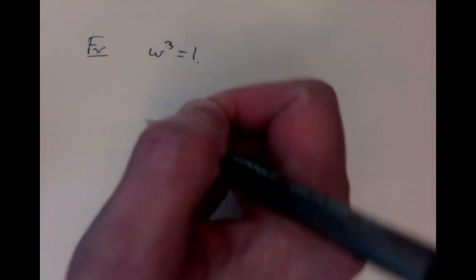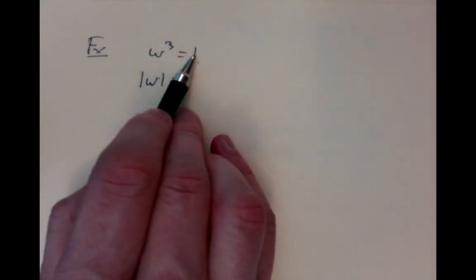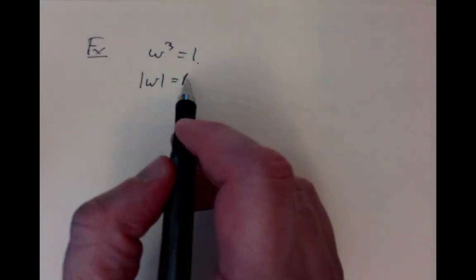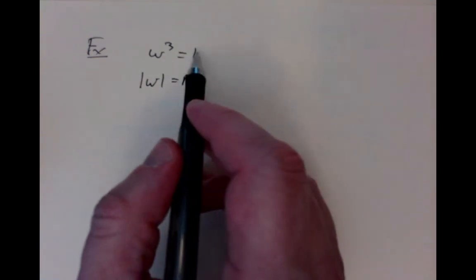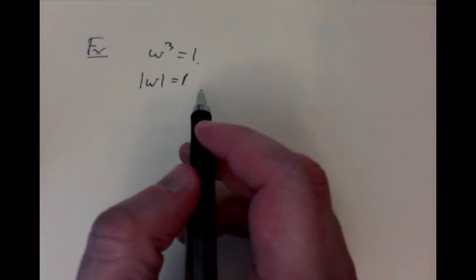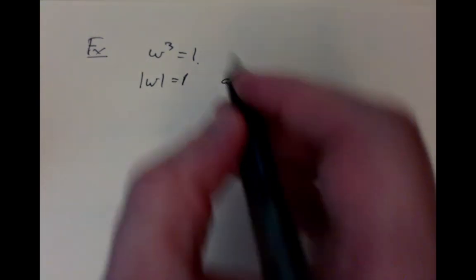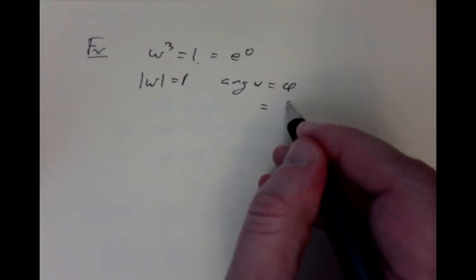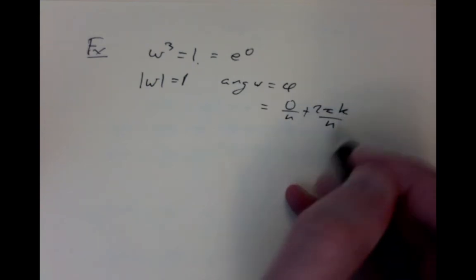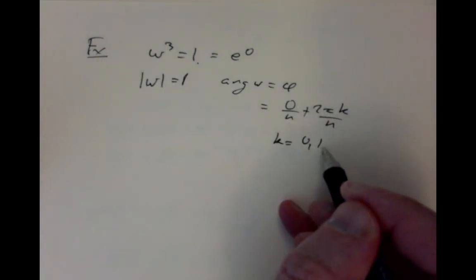The possibilities for phi: phi is theta over n plus 2 pi over n times an integer, where the integer could be 0, 1, 2, dot dot dot, all the way up to n minus 1. Once you hit n, you come back to restart it because it represents the same complex number w answer. A simple example: if we look at finding w cubed equals 1, what are all the solutions? The length of w, the modulus, has to be 1 because if the cube is going to have length 1, then it has to have length 1 when you didn't cube it.